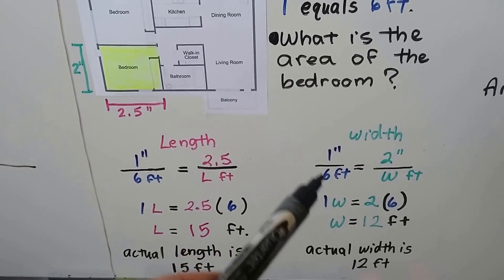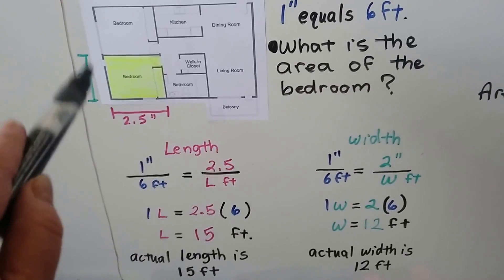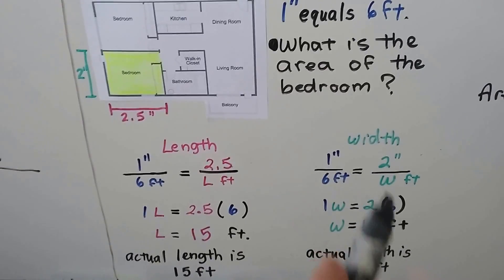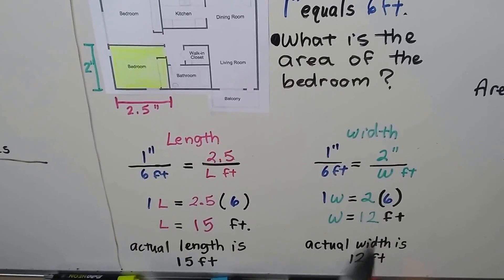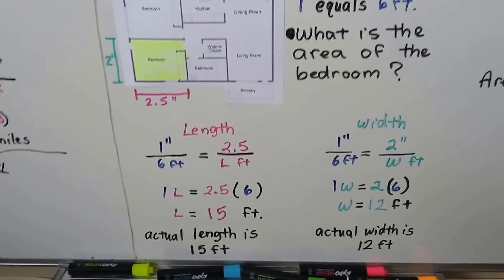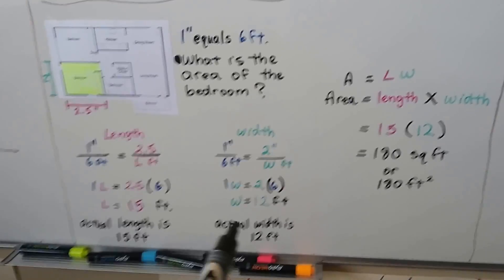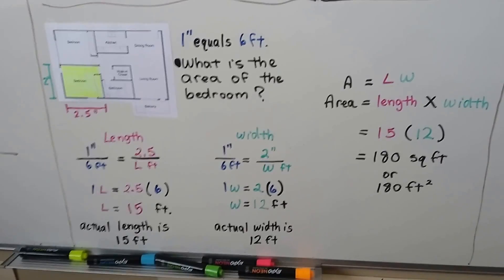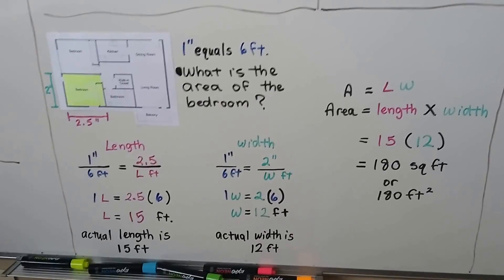For the width, we use our same one-sixth, and it's going to equal the two inches that I measured over W for width. So, we get one W equals two times six. We know the width is twelve. So, we're not done. We need to get the area and area equals length times width. We do our fifteen times twelve and get 180 square feet or 180 feet squared with a little two exponent.